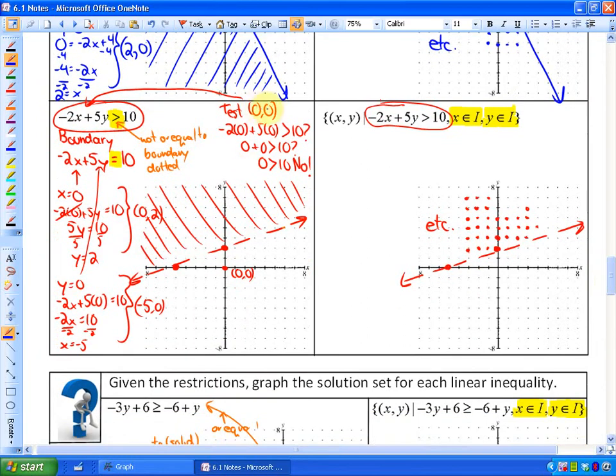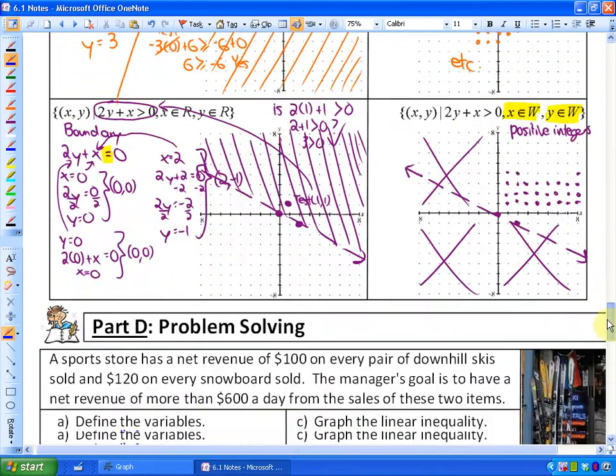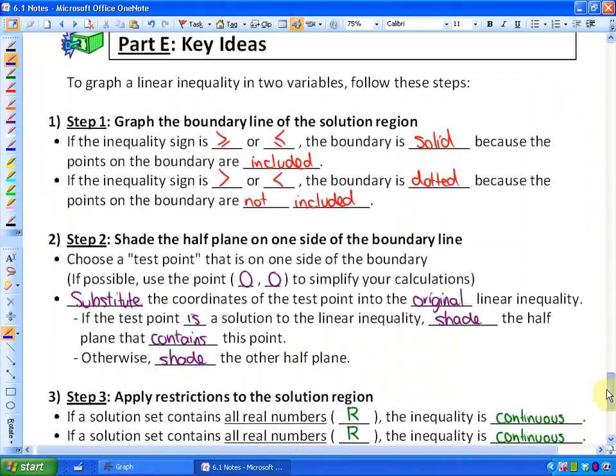Or alternatively, if you look at this example when I tested (0,0), so substituting (0,0) into the inequality, I would ask myself, is negative 2 times 0 plus 5 times 0 greater than 10? And the answer is no, 0 is not greater than 10, so I'd shade, since I tested (0,0), I'd shade the opposite side. So that's how we determine how to shade. Step 1, graph the boundary. Step 2, shade.